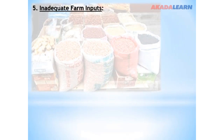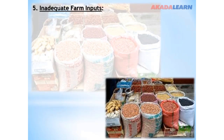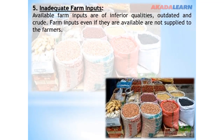Problem number five: Inadequate farm inputs. Available farm inputs are of inferior quality, outdated, and crude. Farm inputs, even if they are available, are not supplied to the farmers.